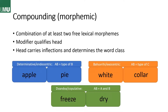Then we have compounding as a morphemic word formation process, where we combine at least two lexical morphemes — it could be more. We have a head, which is the last morpheme, and a modifier, which further describes the head. The head gets all the inflections and also determines the word class of the whole compound.